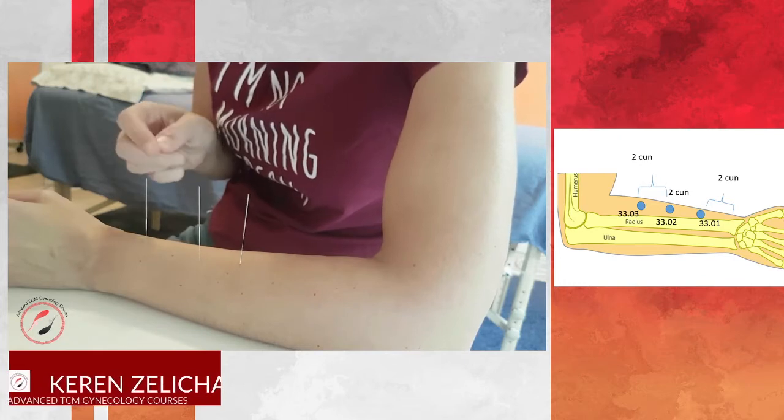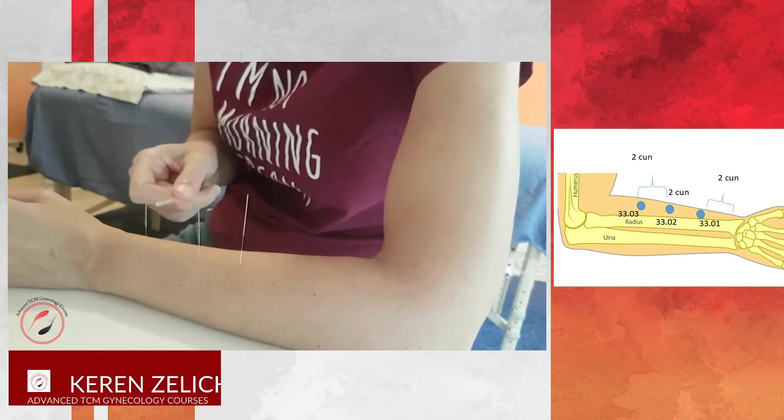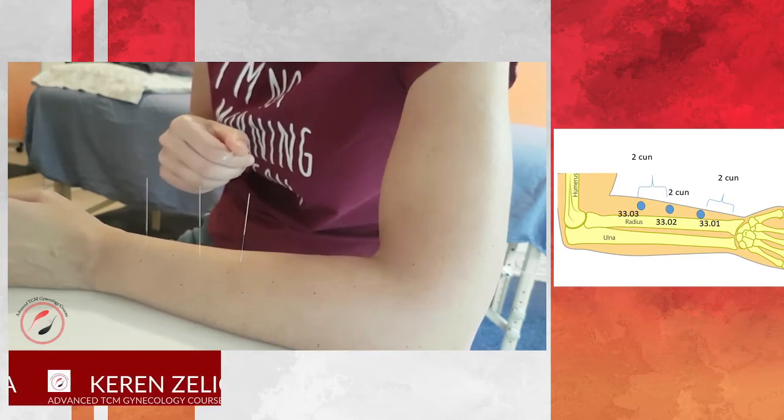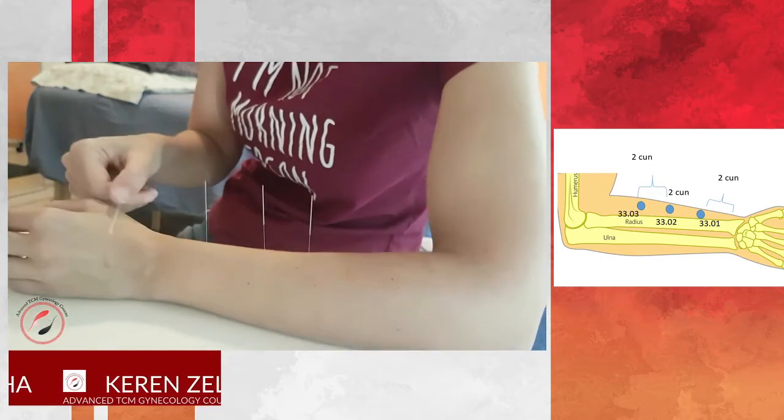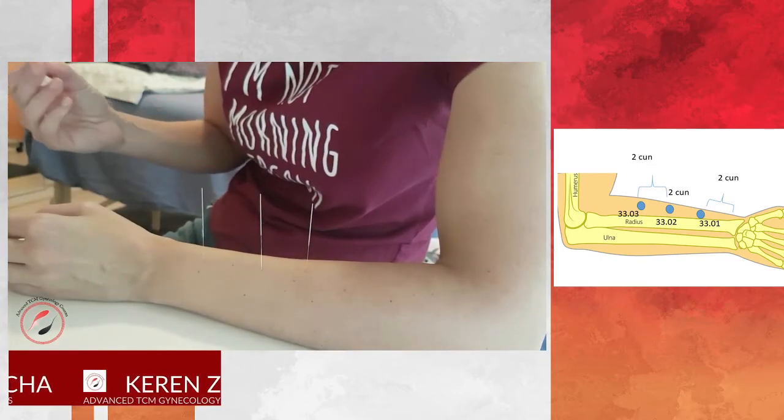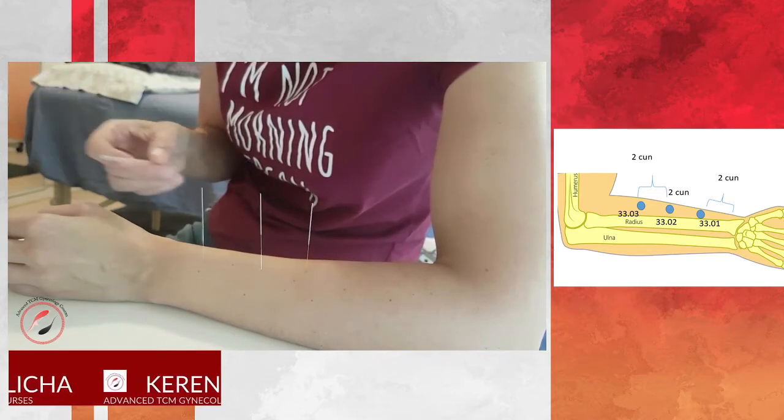You can think about these points for constipation using lingu and dabai here with them, and on the other side you use liver 2 and liver 3 for constipation.